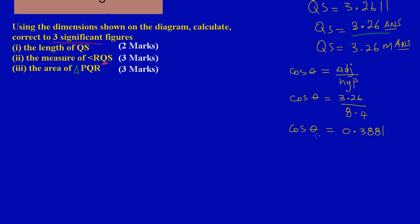Now cos is multiplying theta, so we need to make theta the subject. If cos is multiplying, I must do the opposite which is to divide through by cos. Cos will cancel cos, leaving me with theta.